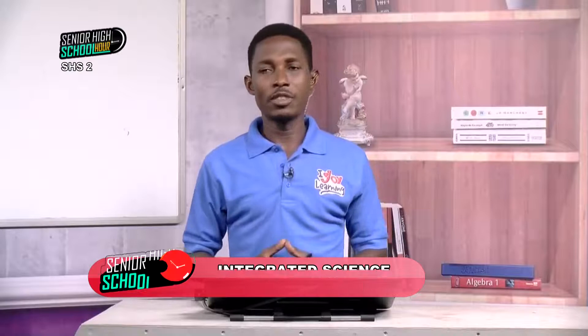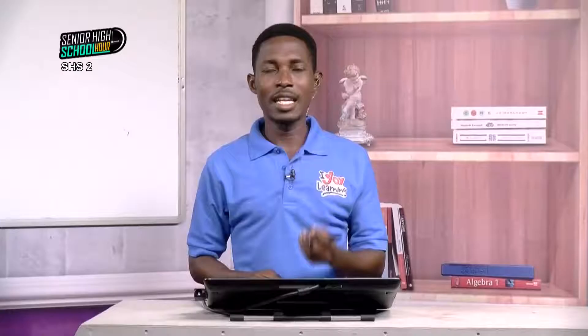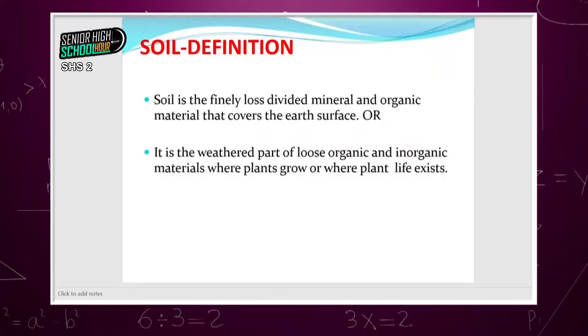But the question is: where did soil come from, and how will you define soil? Any time you see a small stone, put in your mind that it was once a big stone. Many things have happened to it for it to keep breaking down into smaller forms. That small stone will eventually crush into very small particles that you can feel or spread in your palm. To define soil, we say soil is the finely loose, divided minerals and organic material that cover the earth's surface. It can also be defined as the weathered part of the loose organic and inorganic material where plants grow or where plant life exists.